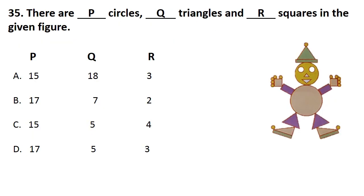Question No. 35. There are P circles, Q triangles and R squares in the given figure. Answer is Option B. That is 17 circles, 7 triangles and 2 squares.